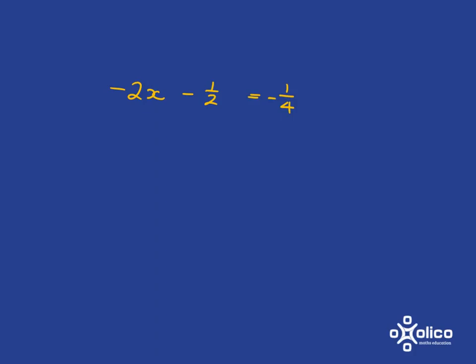So the very first thing we need to do is get rid of this subtracting a half, and what we need to do to do that is to add a half. So what we will get is negative 2x is equal to negative a quarter plus a half.